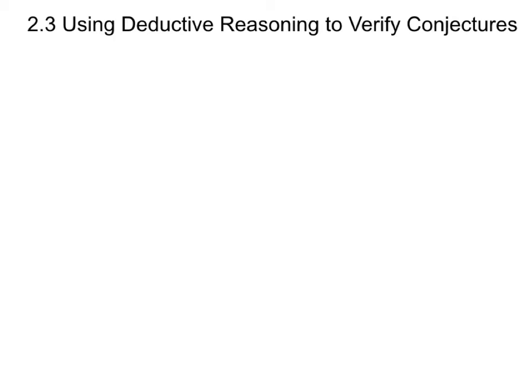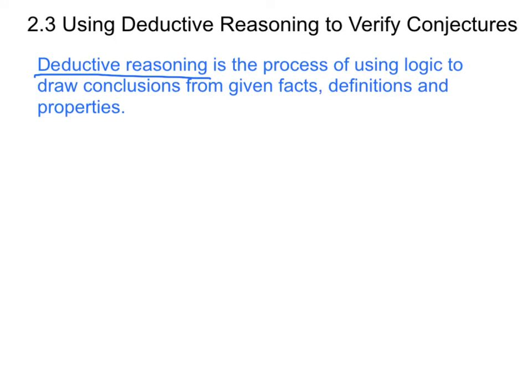In Section 2.3, we're going to use deductive reasoning to verify conjectures. So there's going to be both inductive reasoning and deductive reasoning. Deductive reasoning is the process of using logic to draw conclusions from given facts, definitions, and properties.